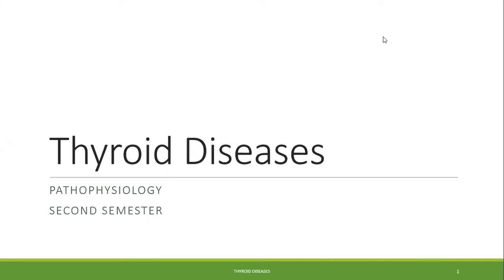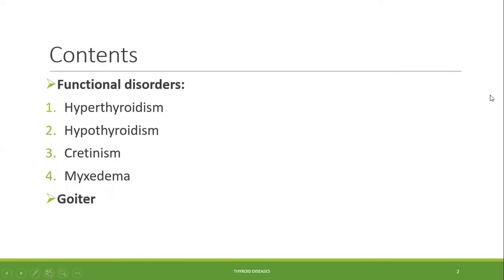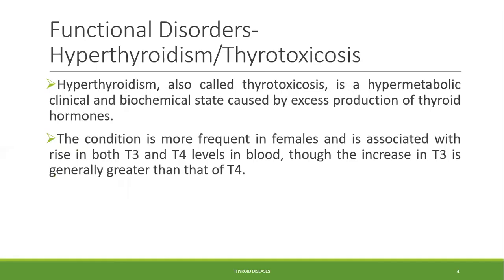Good morning everyone. In the last lecture we completed the functional disorders of the thyroid gland. Today we are going to study the second part of this chapter, that is goiter. We have studied hyperthyroidism and hypothyroidism, including cretinism — which is hypothyroidism in adolescence and children — and myxedema, which is hypothyroidism in adulthood.